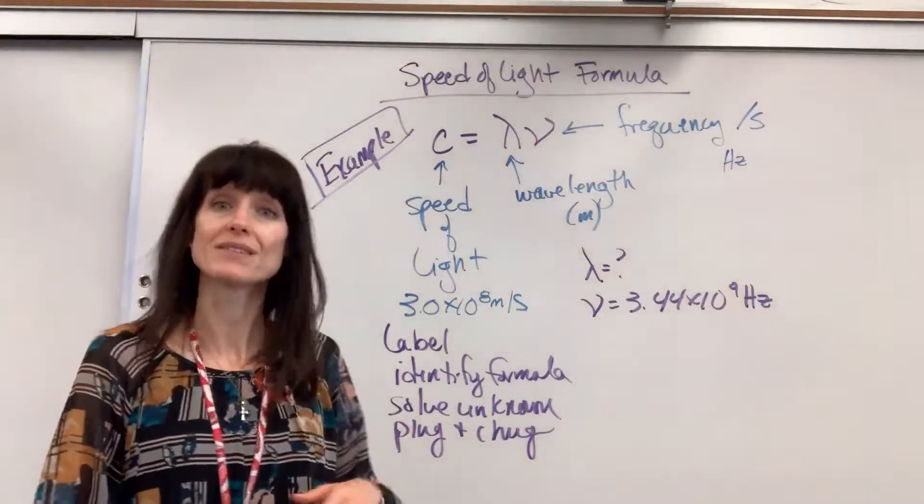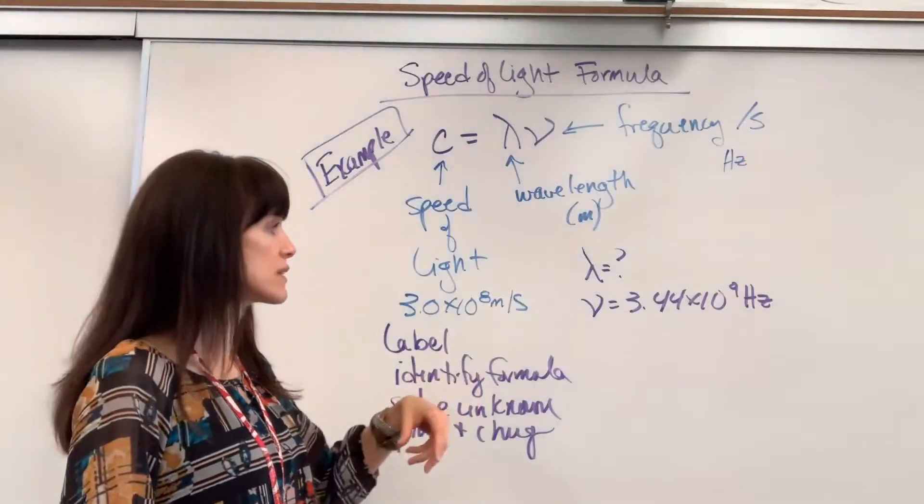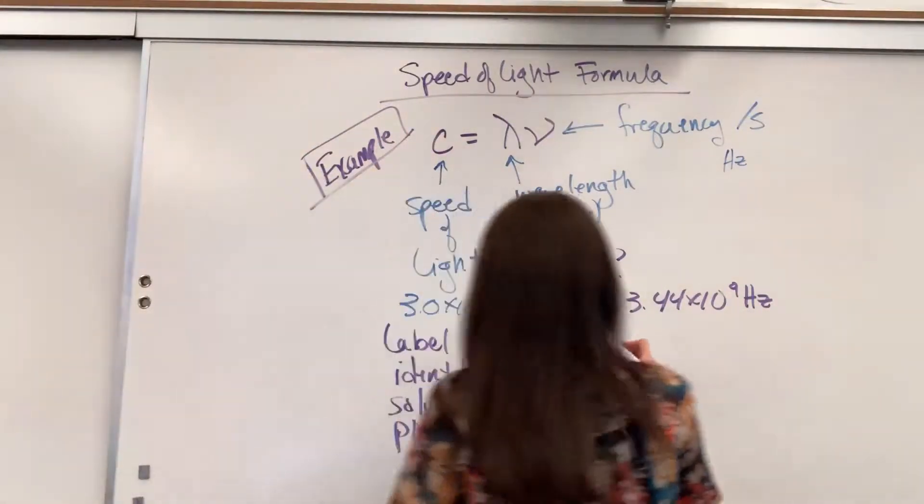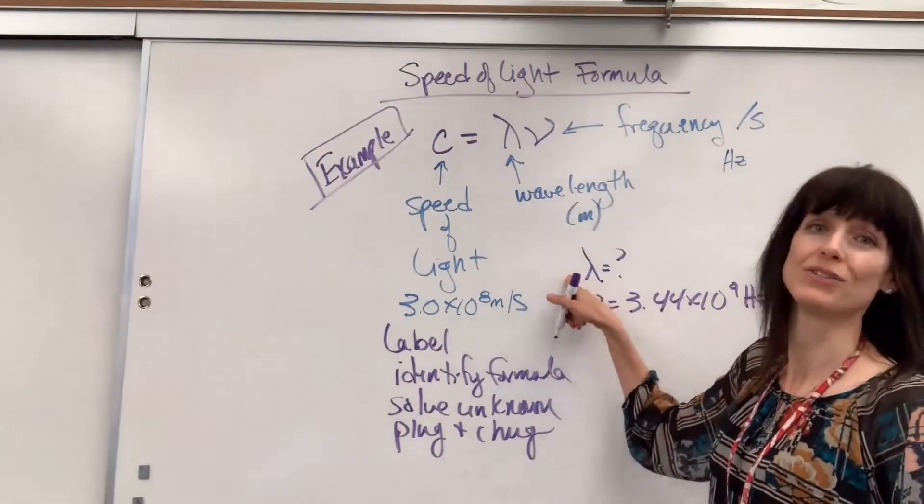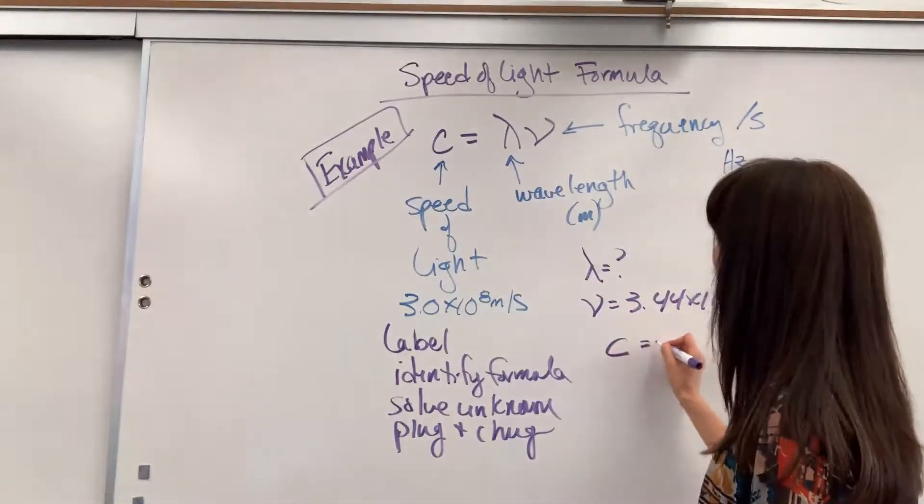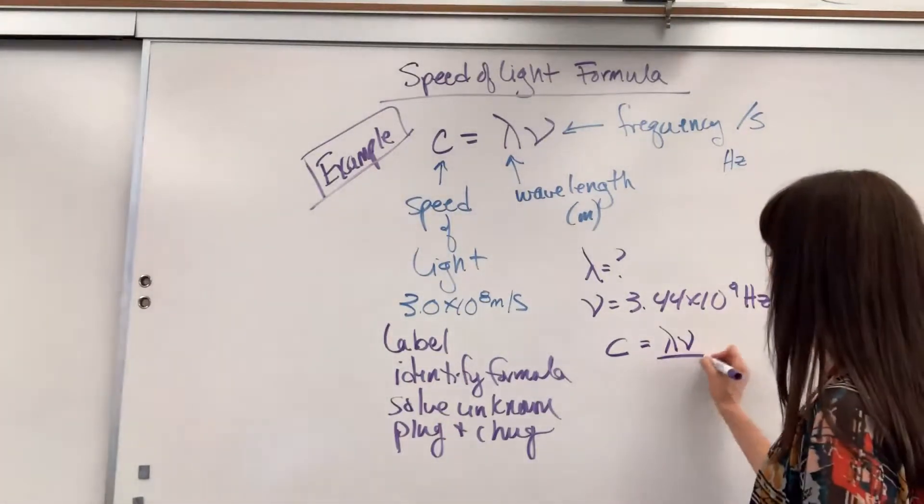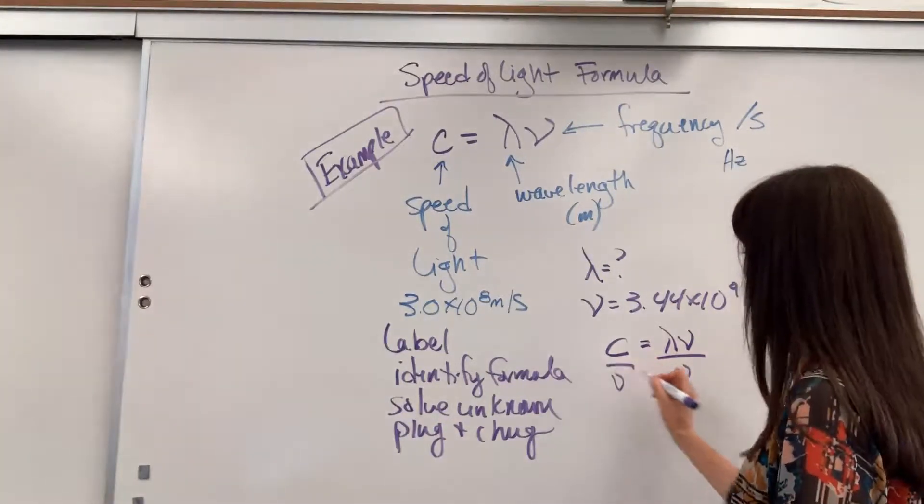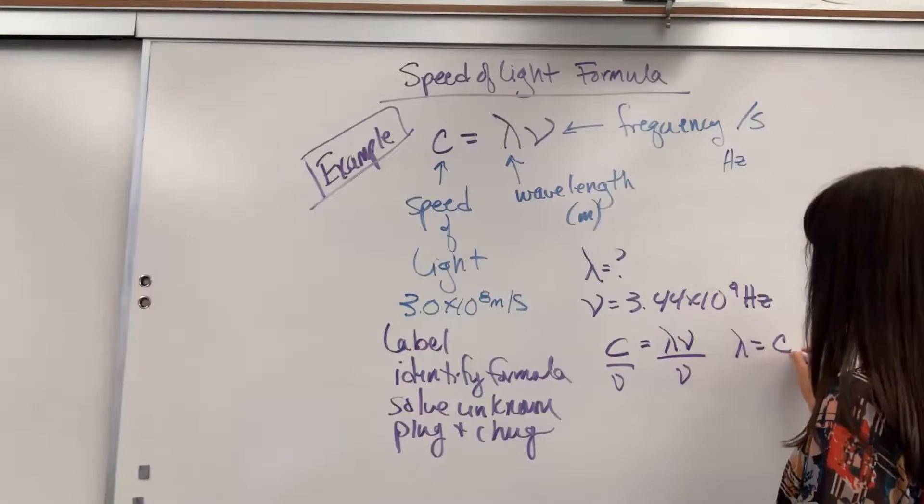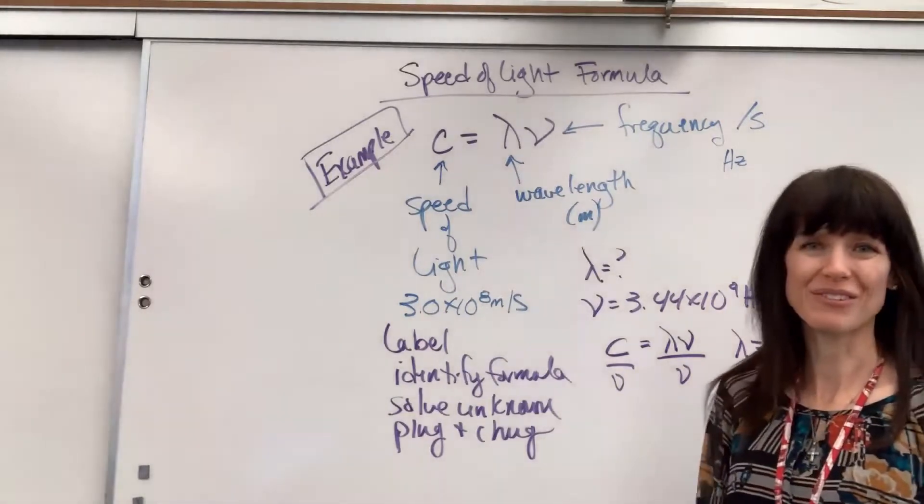So we're at the solve for the unknown. I've labeled everything. I've identified my formula. Let's go ahead and solve. I want to isolate lambda. So speed of light equals lambda times nu. I want to get lambda by itself, so I divide both sides by nu. Lambda will equal speed of light divided by nu.